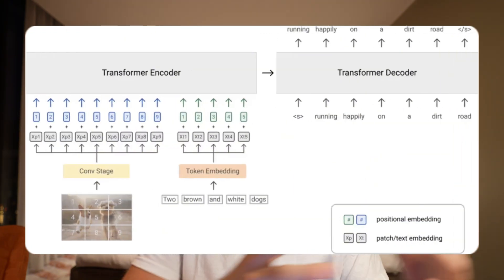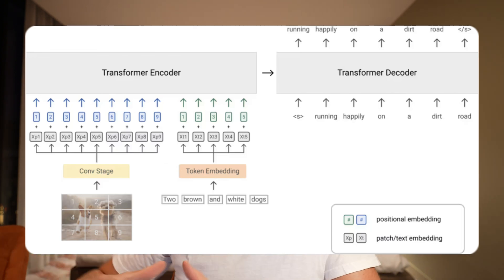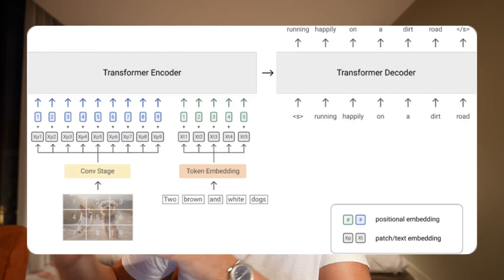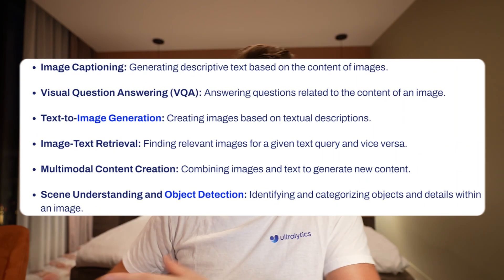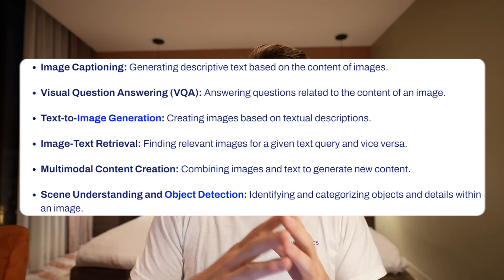You've probably heard about large language models like GPT from the natural language processing space, but now we can also use them with computer vision. It works in much the same way — we take a sentence, throw it into a transformer architecture, and get a response back. That could be question answering, image captioning, and so on.